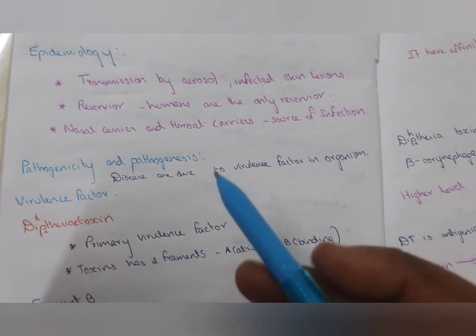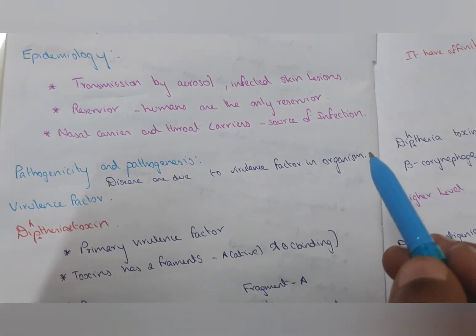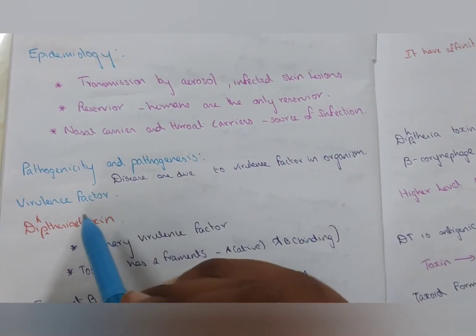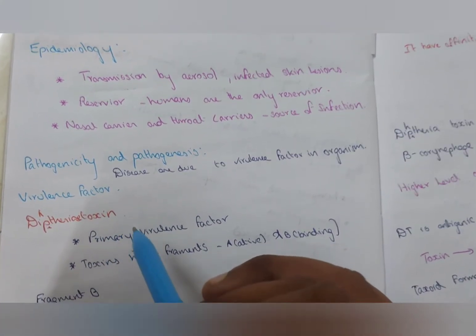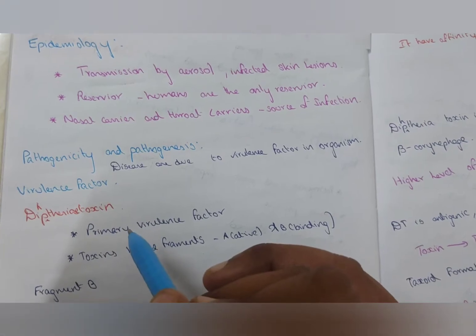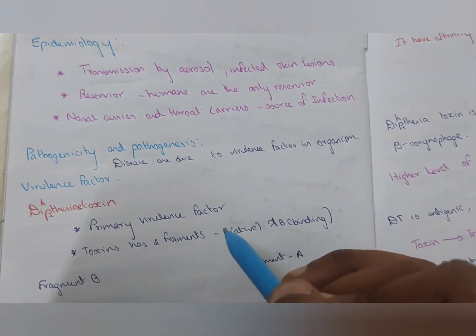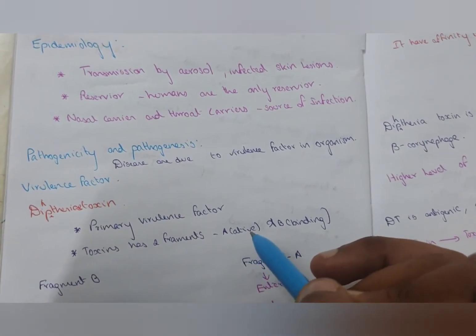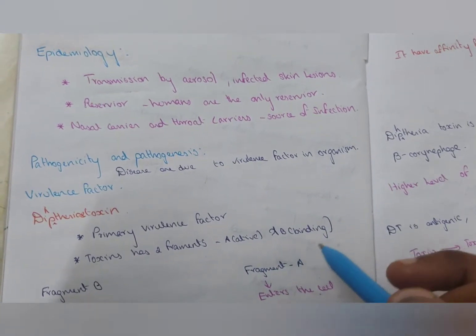Pathogenicity and pathogenesis. Diseases are caused due to virulence factor for any organism. Here the virulence factor is diphtheria toxin. Primary virulence factor. Toxin has two fragments. This diphtheria toxin has two fragments, A and B. A for active and B for binding.